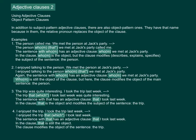Example 4: 'I enjoyed the trip. I took the trip last week.' Combined: 'I enjoyed the trip that or which I took last week.' The sentence with 'that' has an adjective clause: 'that I took last week.' In the clause, 'that' is still the object, and the clause modifies the object of the sentence — 'the trip.'